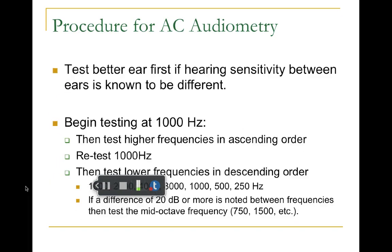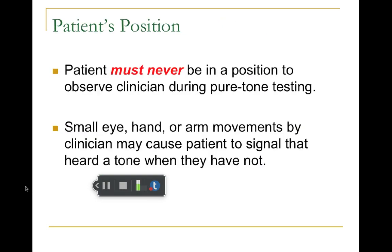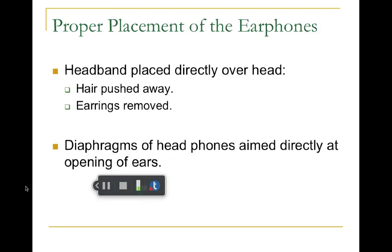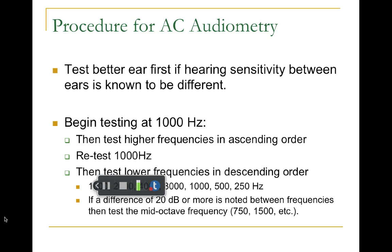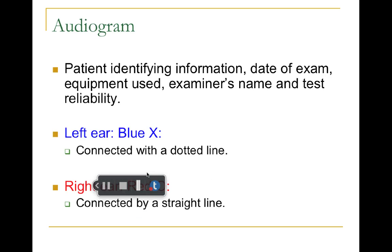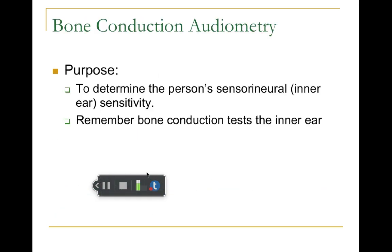When testing air conduction, you test at 1000, 2000, 4000, and 8000 Hz, then retest 1000, then 500 and 250 Hz. You get the threshold — the lowest level they hear — at each of these frequencies. You may also need to go back and test inter-octave frequencies, testing in between, if there's a difference in thresholds of 20 decibels or more between adjacent frequencies such as 1000 and 2000 or 2000 and 4000 Hz.